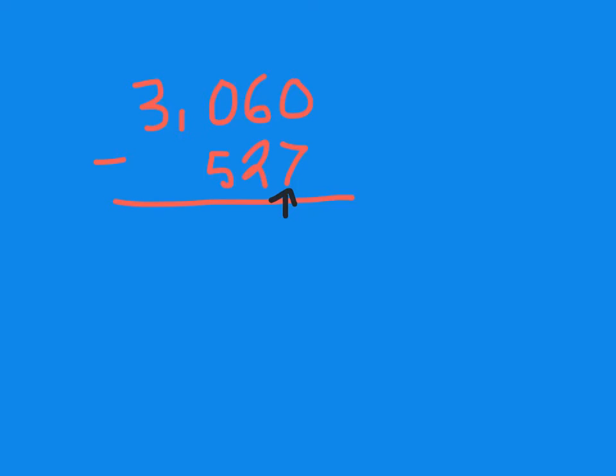That means I also need to add 3 to my top number. So now I have 3,063, and my bottom number when I add 3 to the 7, I get 10. That changes my bottom number. I'm going up by 3, so now I have 530, and it's still a subtraction problem.